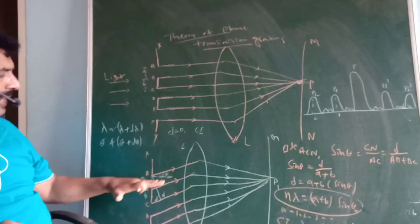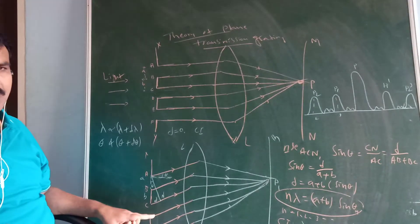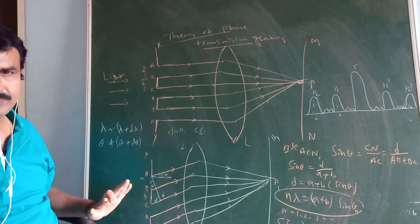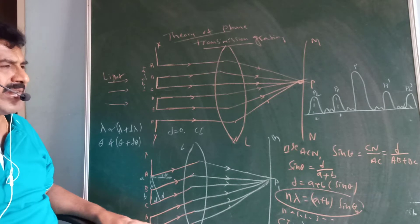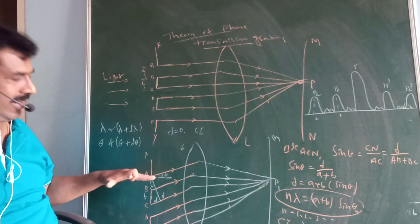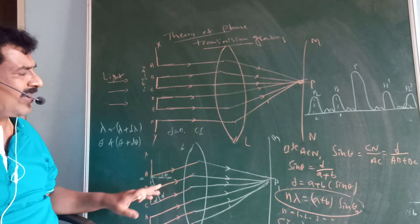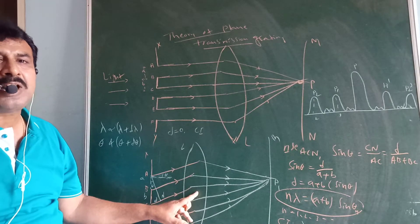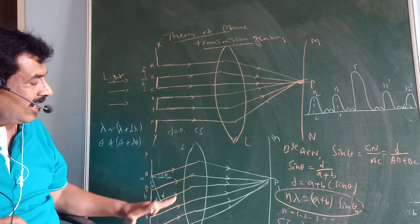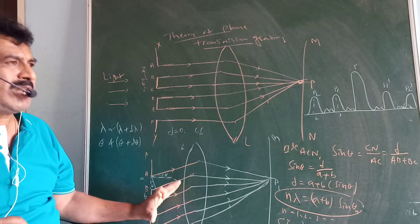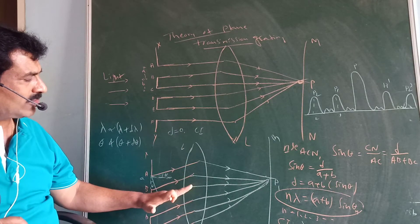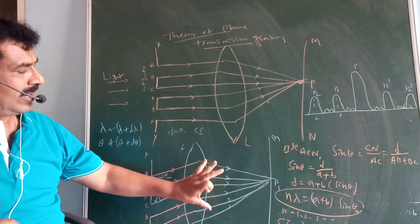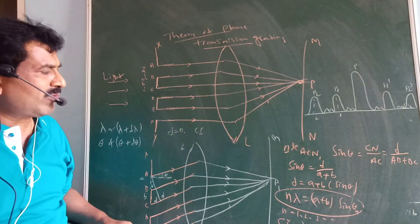Next, the secondary waves from the extreme ends of each slit get deviated or bent at an angle theta with the direction of incident light. The angle of diffraction is theta. The secondary waves bend at this angle theta. Correspondingly, the lens L is oriented with its principal axis parallel to the secondary waves. After refraction through the lens, all the waves or rays come to focus at point P1 on the screen.